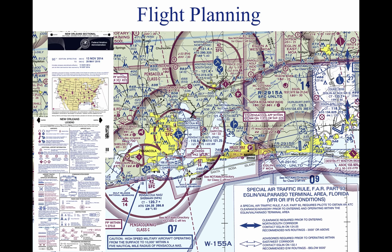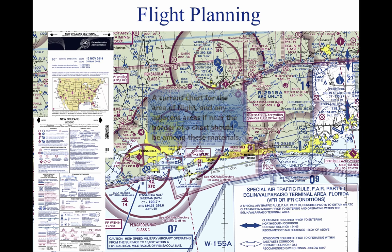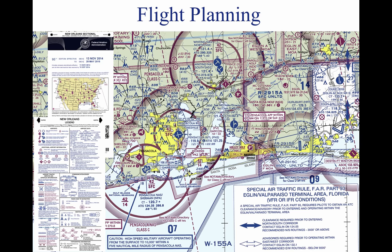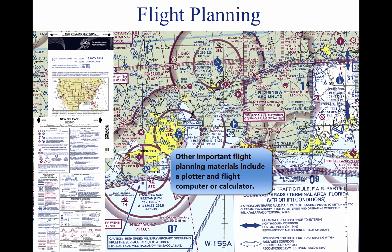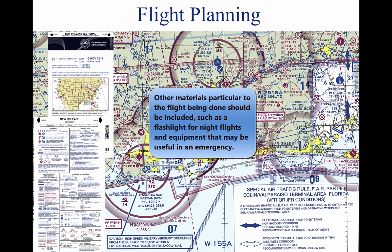Assembling Necessary Material. The pilot should collect the necessary material well before the flight. An appropriate current sectional chart, and charts for areas adjoining the flight route should be among this material if the route of flight is near the border of a chart. Additional equipment should include a flight computer or electronic calculator, plotter, and any other item appropriate to the particular flight. For example, if a night flight is to be undertaken, carry a flashlight. If a flight is over desert country, carry a supply of water and other necessities.